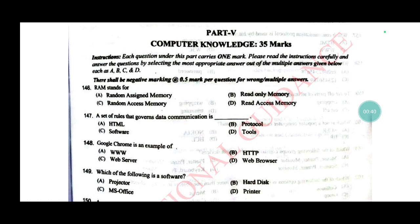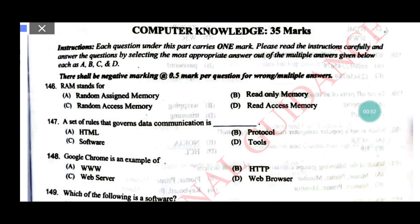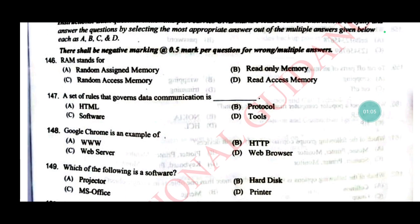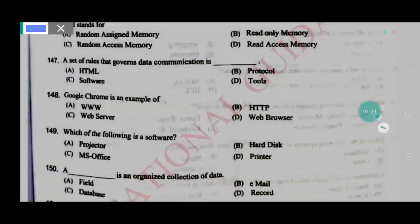Let's talk about computer knowledge, starting from the first question. Random Access Memory — a set of rules that governs data communication is called a protocol, answer B. Google Chrome is an example of a web browser, answer D. Which of the following is software? Answer C: MS Office.